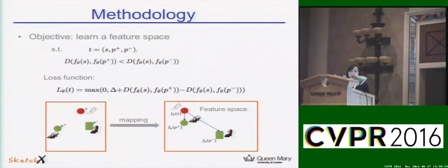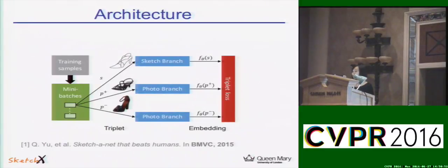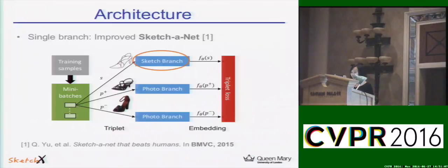Next I will introduce the methodology. Our goal is to learn a feature space where the distance between a query sketch and a candidate photo can be used as a similarity score. We apply a convolutional neural network with triplet loss to realize this mapping. We formulate a triplet ranking model that accepts triplet tuples as input, using a Siamese network where all three branches share the same network parameters during training. For the single branch, we applied an improved version of SketchNet, a deep network achieving state-of-the-art performance in sketch recognition that we designed previously. Although we collected new sketch datasets, data sparsity is still a significant problem when training the model.